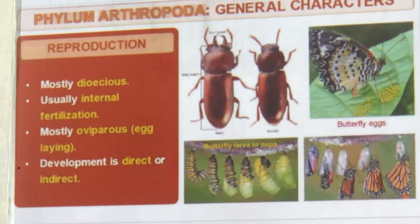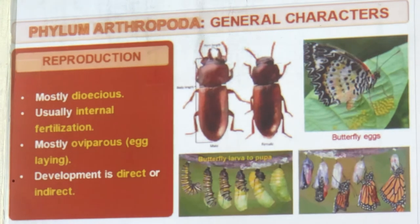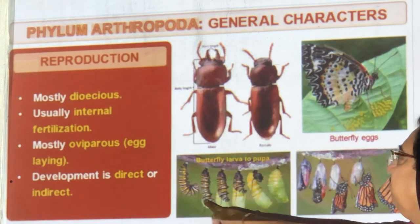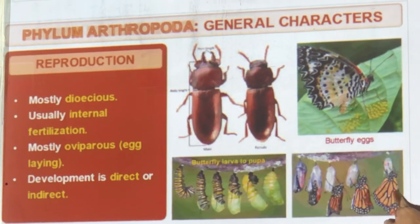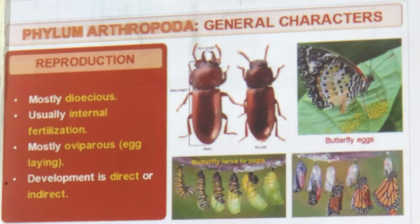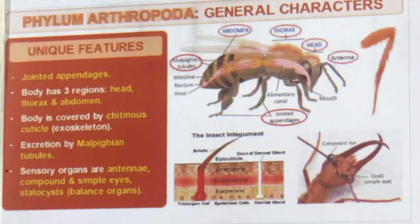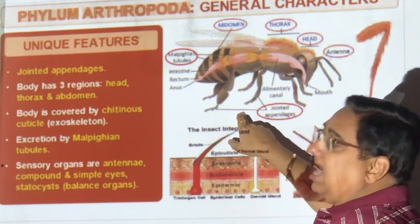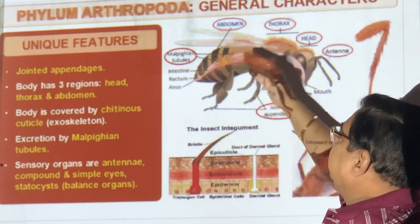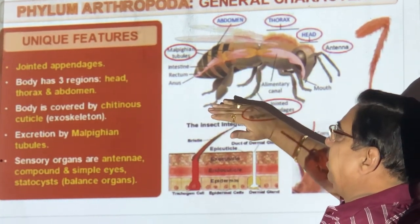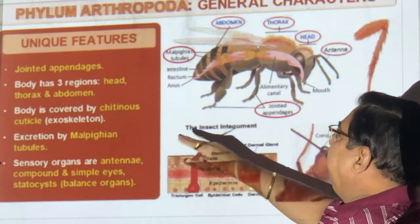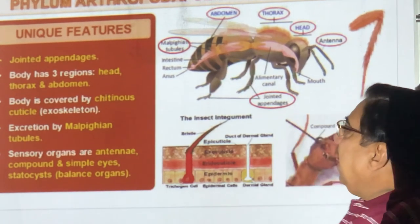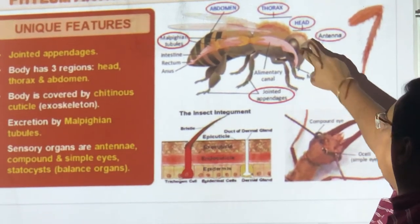Reproduction: mostly dioecious — male and female are separate. Fertilization is internal. They lay eggs. Development has larvae — you can see butterfly to pupal stage. Unique: jointed appendages seen for the first time. Body has a chitin cuticle outside — that shiny red cockroach has this. Malpighian tubules are inside for excretion. Well-developed sense organs: antennae, compound eyes, simple eyes.